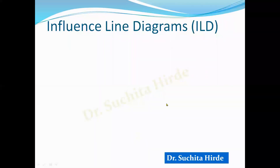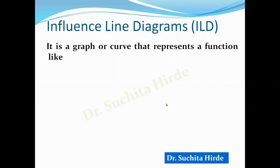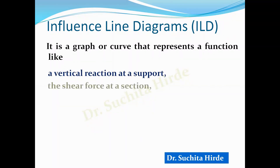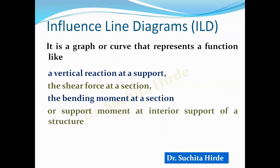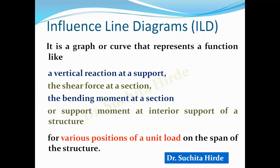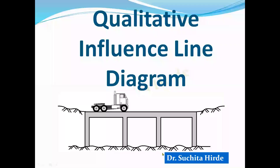We also studied that an influence line diagram is a graph or curve that represents a function — like a vertical reaction at a support, the shear force at a section, the bending moment at a section, or support moment at an interior support — for various positions of a unit load on the span of the structure. Whenever the structure is subjected to moving load, it is important to know where the live load should be placed to produce the maximum effect of that function.